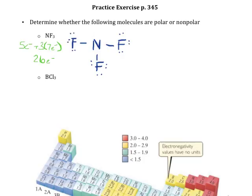Since I've got two more electrons, those are going to go on the central atom. Checking our octet: fluorine has 2, 4, 6, 8 — that's good. Since all the other fluorines are bonded in the same way, they will also all have their octets. Checking nitrogen: 2, 4, 6, 8 — nitrogen also has its octet.